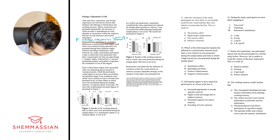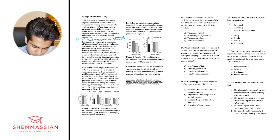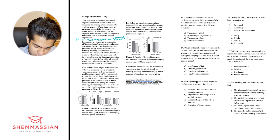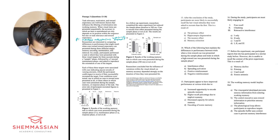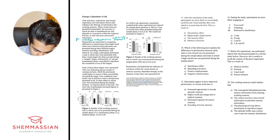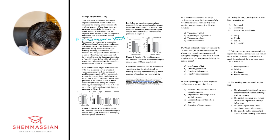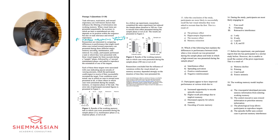Researchers are interested in comparing differences in performance that might result when cues toward reward expectancy are presented during three different stages: memory encoding, maintenance, and retrieval. In a study, participants performed a task in which they were presented with three visual targets for three seconds during a sample phase, followed by a two-second maintenance phase, and then they were asked to reproduce the orientation of one of the targets.